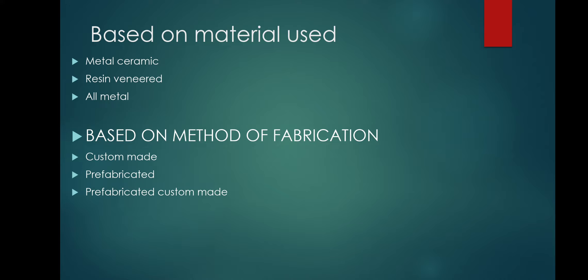Resin veneer pontics use a conventional gold alloy structure. Their disadvantages include poor abrasion resistance, poor aesthetics, and less strength. They are indicated for long-term provisional restorations and are contraindicated for definitive restorations — they should be used in provisional restorations only.